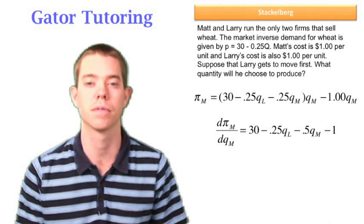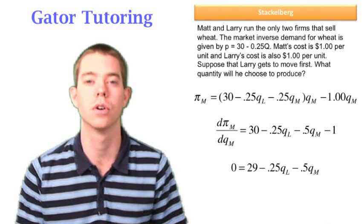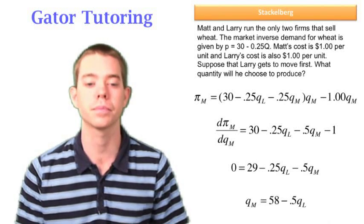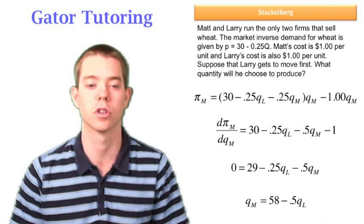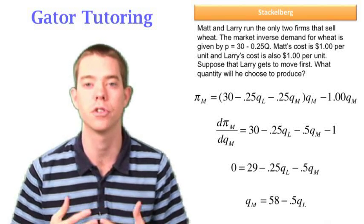We take the derivative of Matt's profit function with respect to Qm, set it equal to zero, and solve for Qm. So here we have Matt's reaction function, which is Qm equals 58 minus 0.5 Ql.